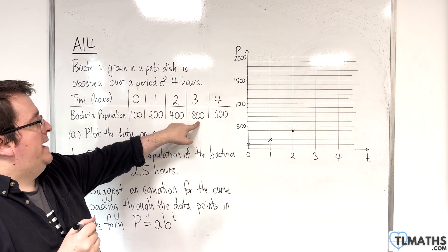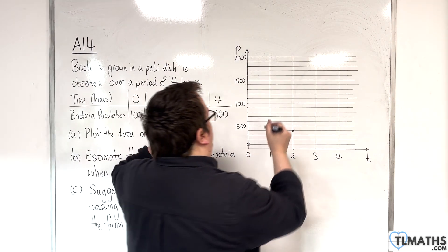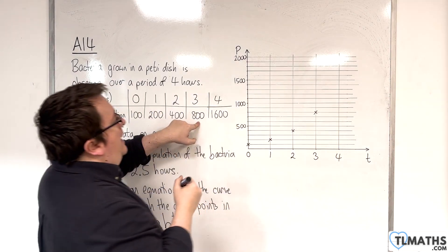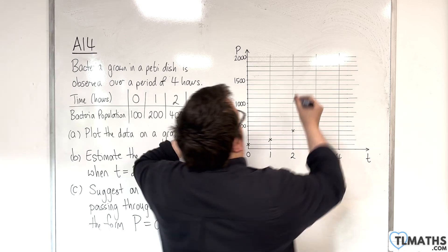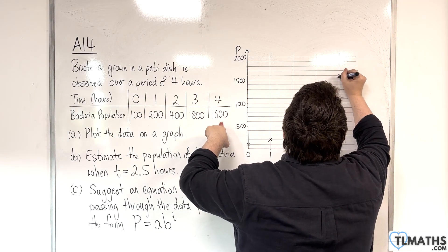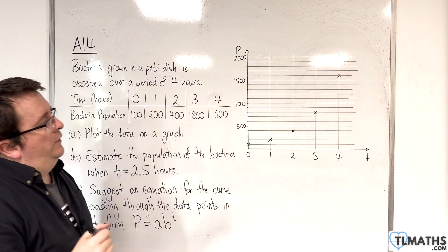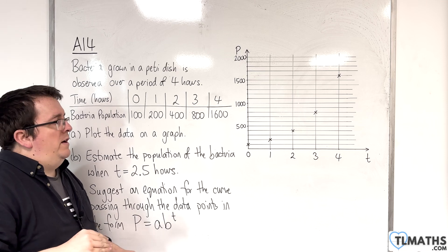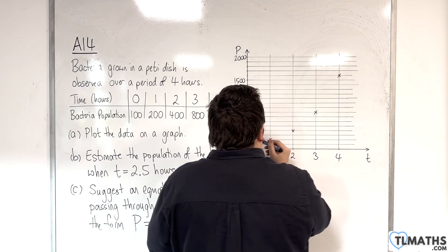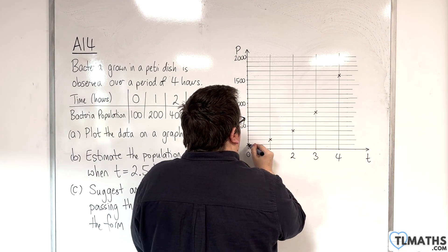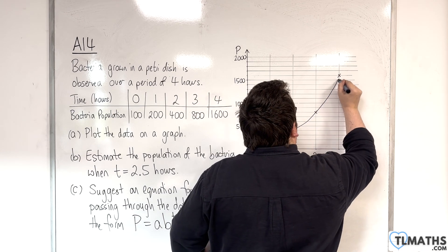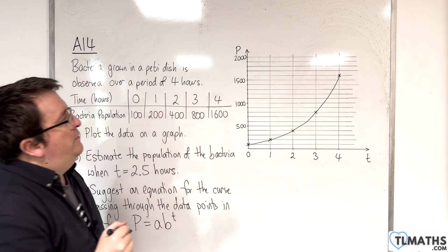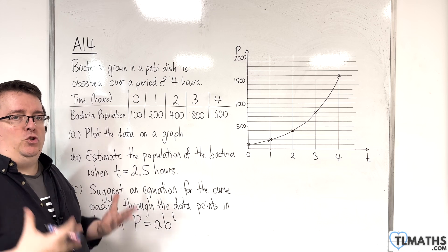After three hours, we're at 800, which would be there. And then after four hours, we're at 1,600, which is up here. This is the shape of my graph, and now I need to draw a curve that goes through it. This is an exponential curve. This is exponential growth.